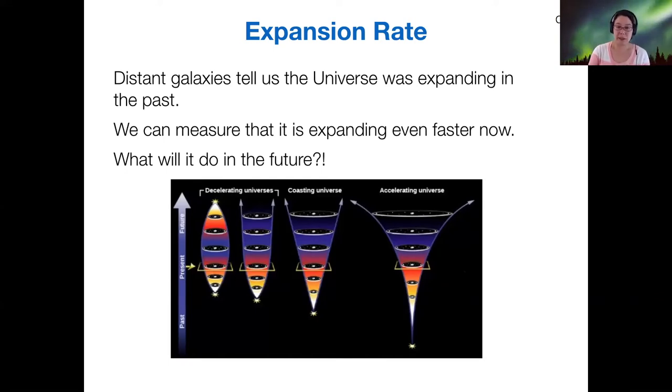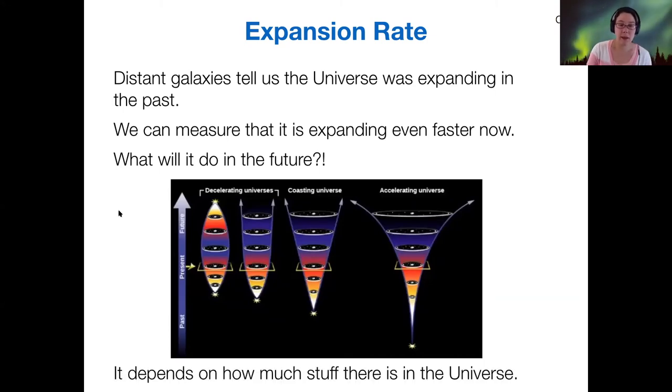I say all of this because I found this to be a rather confusing graph at first. And all of these models depend on how much stuff there is in the universe, so how much matter and how much dark energy, because as we mentioned in the last slide, those two things are essentially competing to influence the overall expansion.